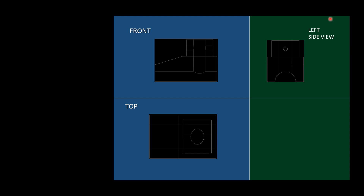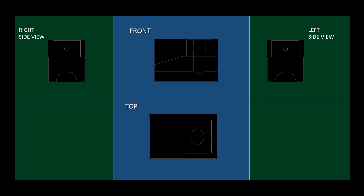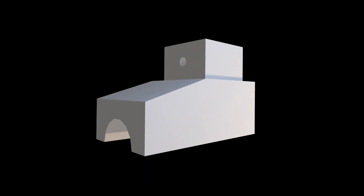When we rotate the vertical plane to get the right side view, we look at the front view of the left side. The reference lines are XY and X1Y1 for the profile plane, vertical plane, and horizontal plane. We will look at these three views: front view, top view, and left side view.